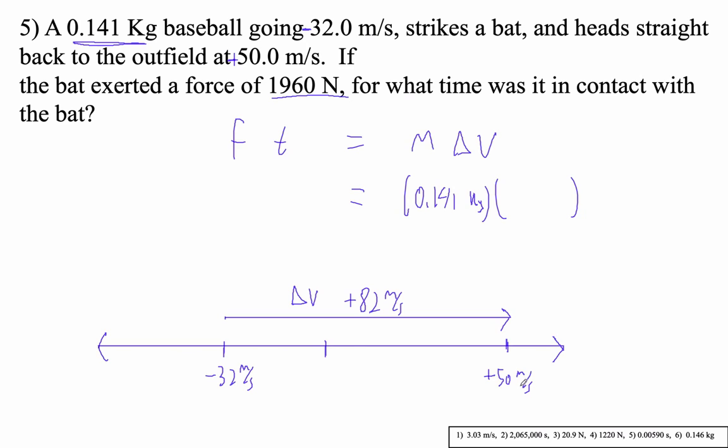I did that in my head, that's how smart I am. So our delta V then is 82 meters per second, and time is what we're trying to solve for. Our force is 1960 newtons, so it's going to be this times this divided by that. 0.141 times 82 divided by 1960.